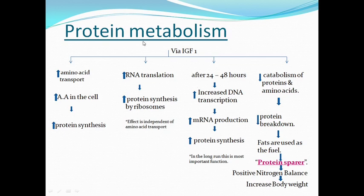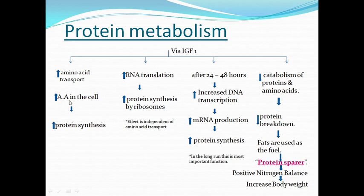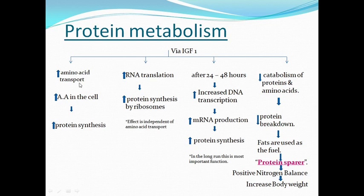Now the functions on protein metabolism. Growth hormone affects protein metabolism with the help of somatomedin C or IGF-1 via the following mechanisms. Number one, it increases amino acid transport and entry into the cell, increasing amino acid concentration inside the cells, which causes increased protein synthesis. Additionally, it causes increased RNA translation inside the cytoplasm and causes increased protein synthesis by the ribosomes of rough endoplasmic reticulum. This increased RNA translation effect is independent of amino acid transport.